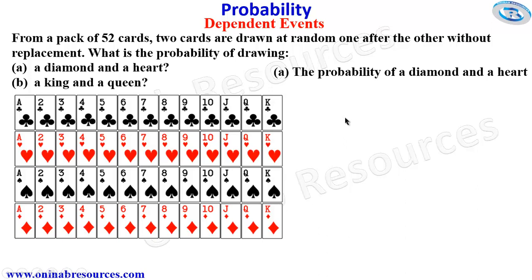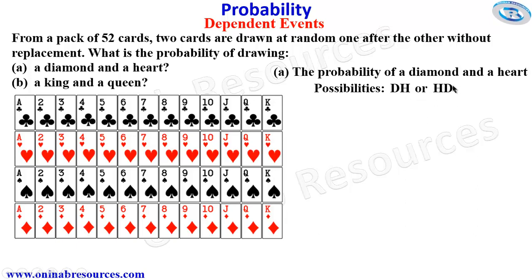So we start the solution here. The probability of a diamond and a hat — we look at the possibilities. Be informed that the order in which they will be taken is important in this situation. It is either you have the diamond coming first followed by the hat as the second, or you pick the hat first followed by the diamond as the second. We then find the probability of each possibility and sum them up.